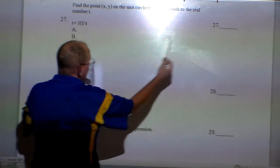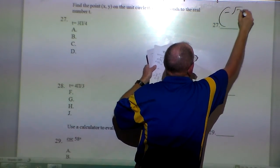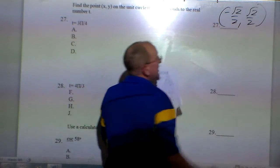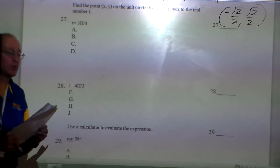The point on there is the following: negative square root of 2 over 2, square root of 2 over 2. That's it. That's all you have to do on problem number 27.